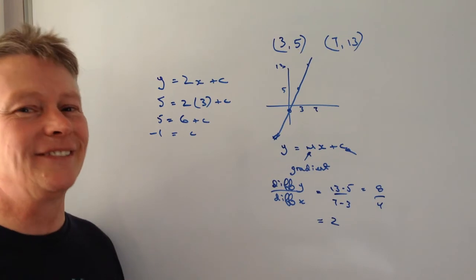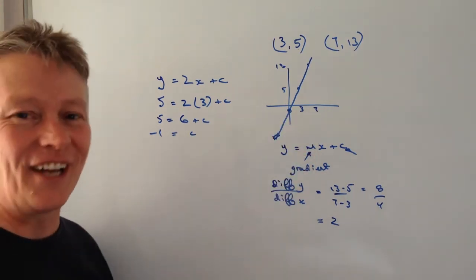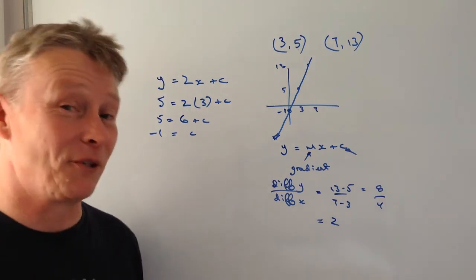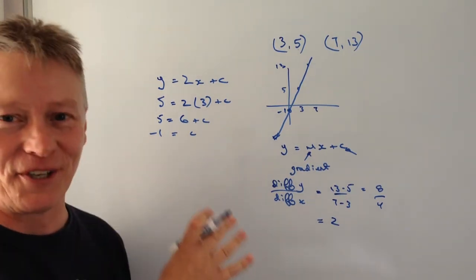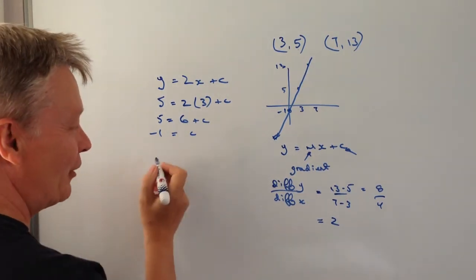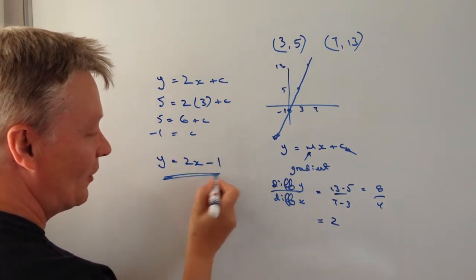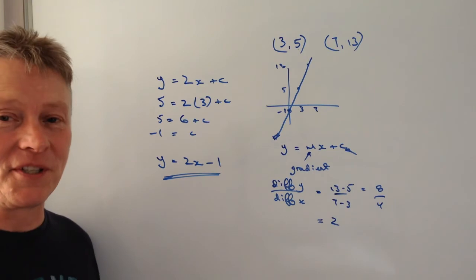So my sketch is a little bit accurate there, this value here is going to be minus 1. Not always that accurate but that's not too bad on this one, because I can write the full equation as y equals 2x minus 1. And that would be the answer to this particular question.